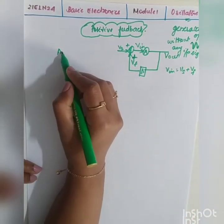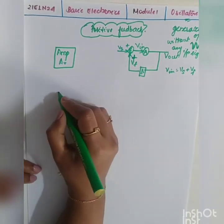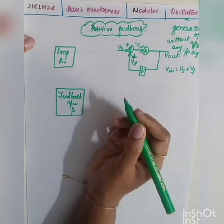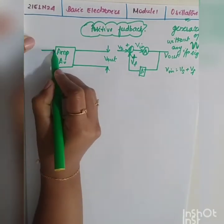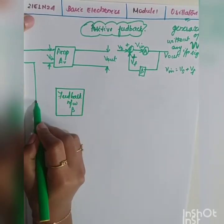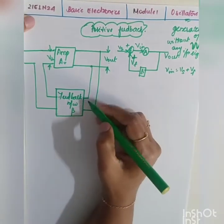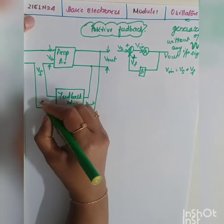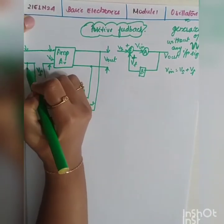Now, drawing the voltage series feedback circuit to find the overall gain: consider an amplifier with voltage gain A_v and a feedback network with gain beta, similar to the negative feedback derivation. The output is V_out, the amplifier input is V_in, and a portion of the output is fed back as feedback voltage V_f, where V_f = beta × V_out.